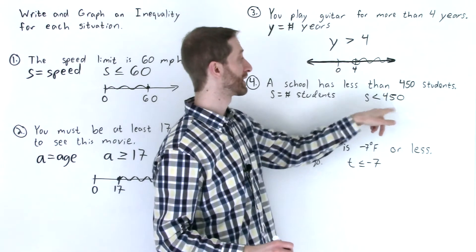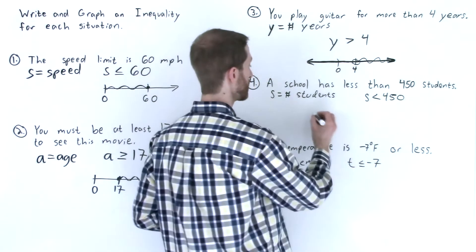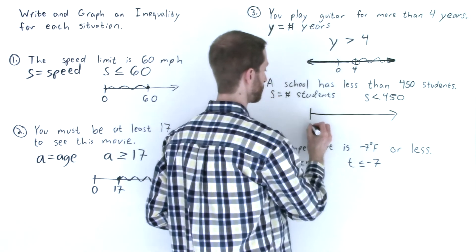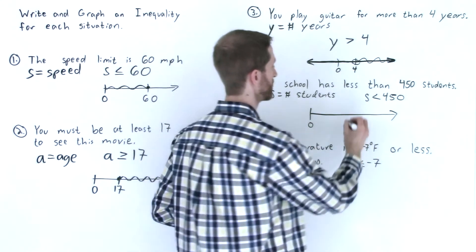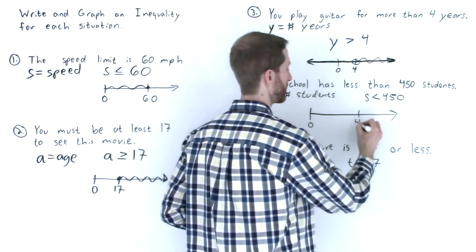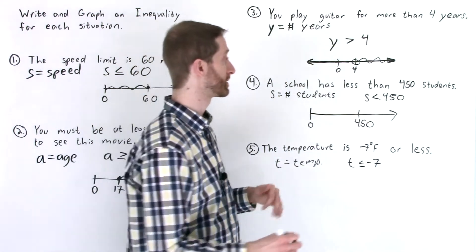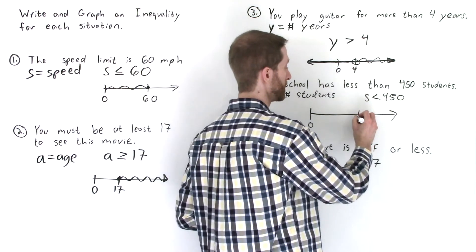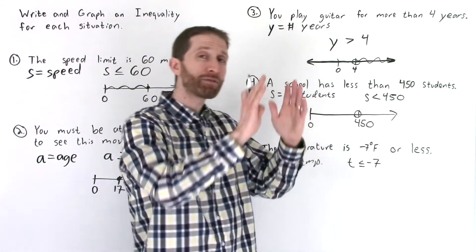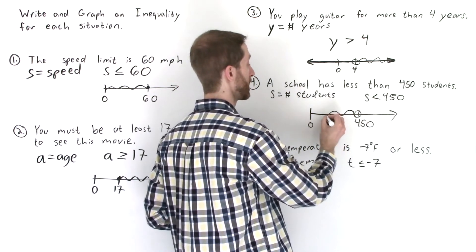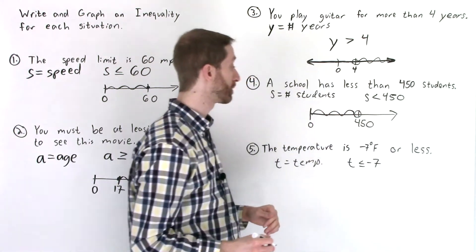This says the number of students is less than 450. I'm going to start our number line at zero because you can't have negative students. And then our boundary, I'll put it arbitrarily here at 450. If we have less than 450 students, that means we don't include the 450, so again, an open circle. And then we have less than 450, that'd be all students before 450 in the number line. So we shade all these values.